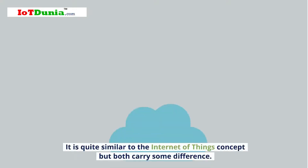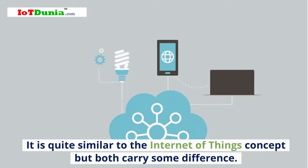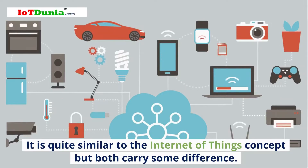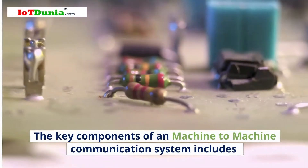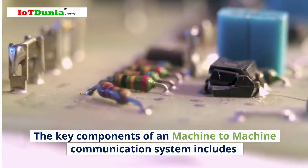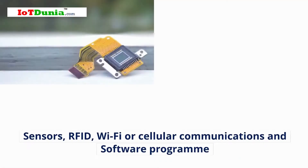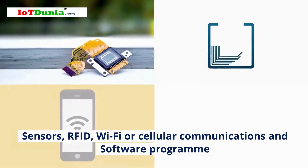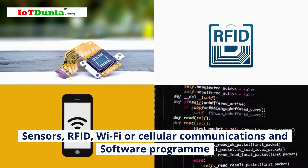It is quite similar to the Internet of Things concept, but both carry some differences. The key components of a machine-to-machine communication system include sensors, RFID, Wi-Fi or cellular communications, and software programs.